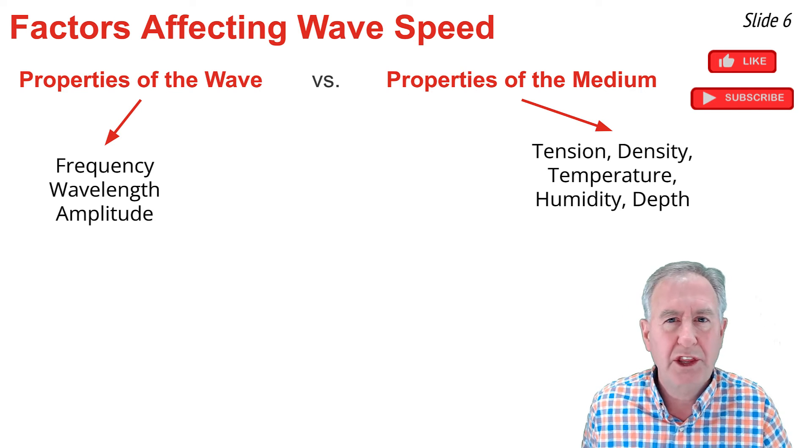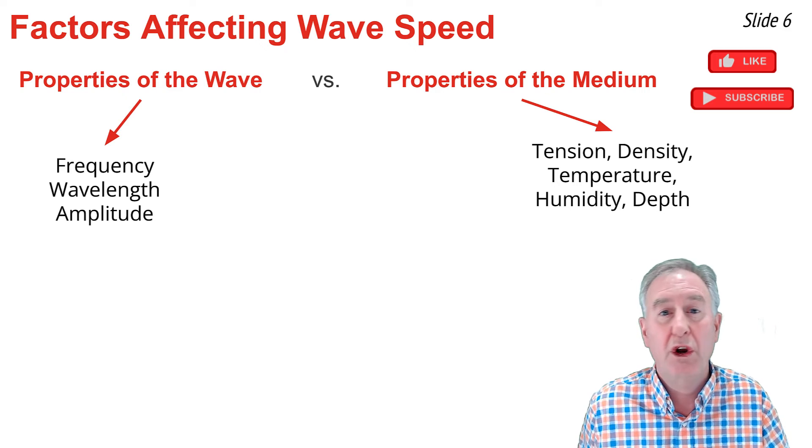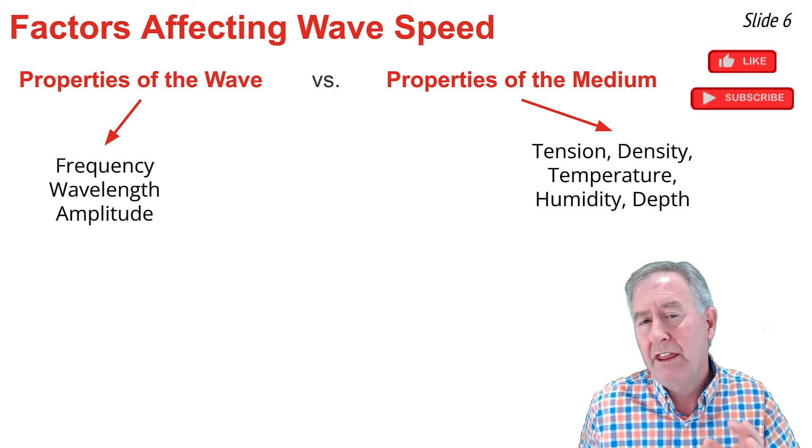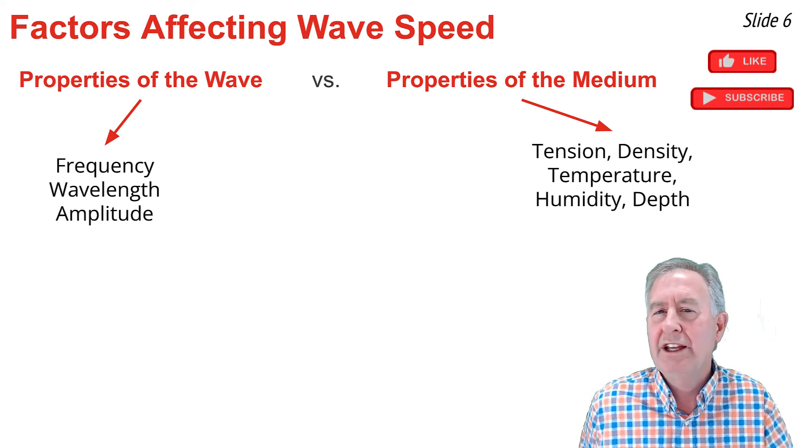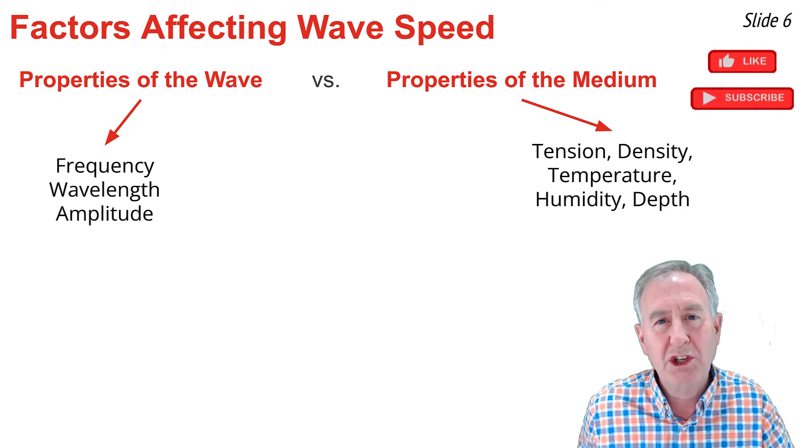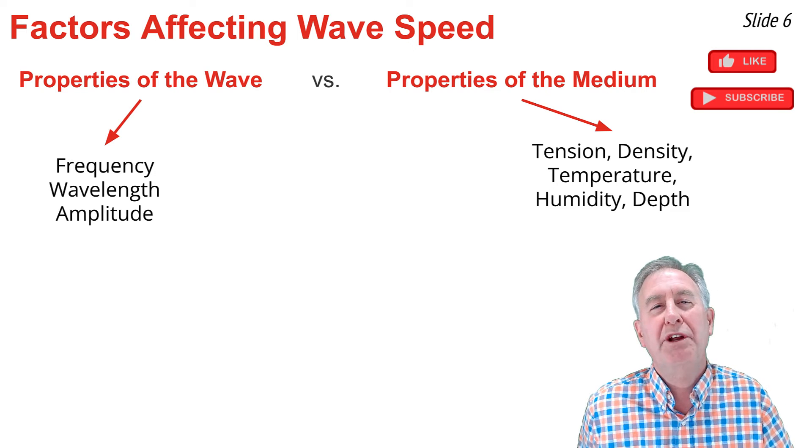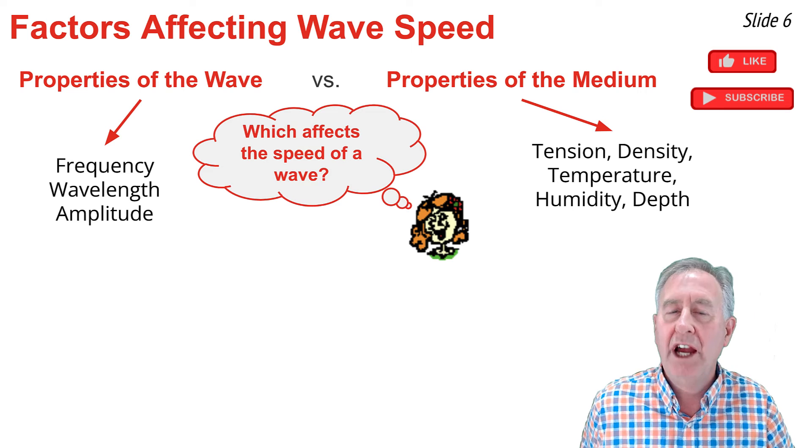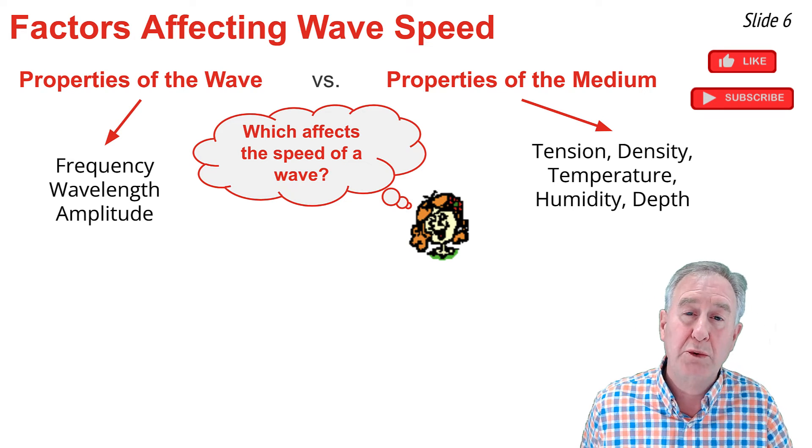And we're going to contrast that type of property with the properties of the medium. Maybe it's the tension in the wire or maybe it's the density of the wire or maybe it's the temperature of air if a waves traveling through air or the humidity of air or the depth of water for a wave traveling through water. These all describe the material the waves traveling through. It's not sensible to talk about the tension of the wave because tension is not a property of a wave it's a property of the medium a wire the waves traveling through.